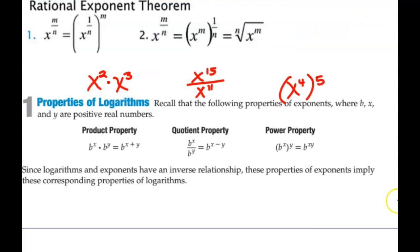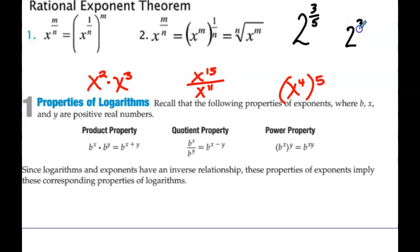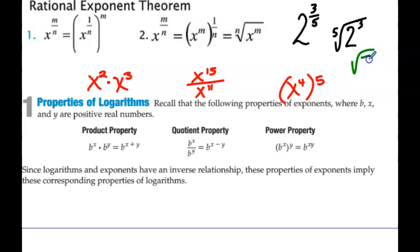So we talked about this yesterday. Everybody remember this? If we had, for example, 2 to the 3 fifths, it would be 2 cubed and the 5 goes out here as the root. Everybody good with that? The bottom number is the root. Additional properties — if you see a square root of 7, that means 7 to the 1 half power.